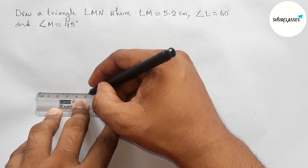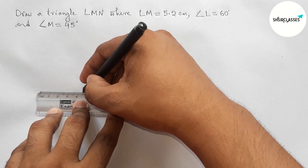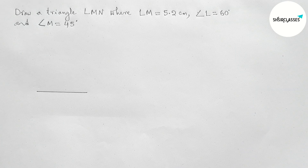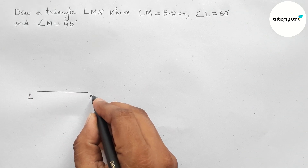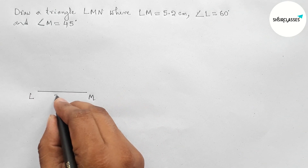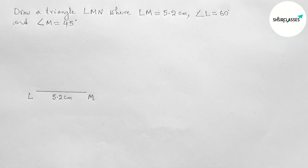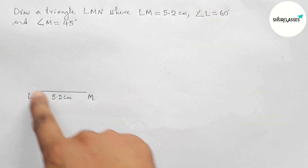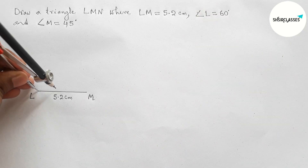First, let us draw LM equal to 5.2 centimeters. This is a 5.2 centimeter line segment. Labeling point L on the left and point M on the right. So LM equals 5.2 centimeters. Next, we will draw angle L equal to 60 degrees on the point L.